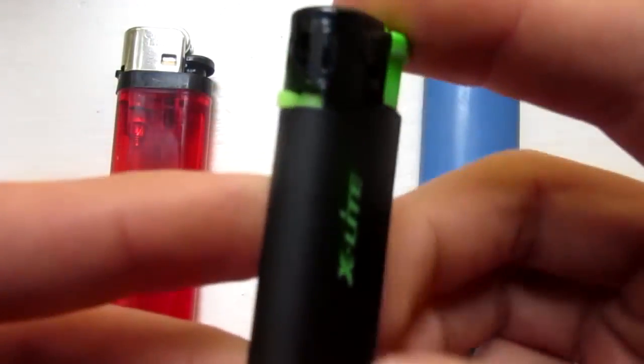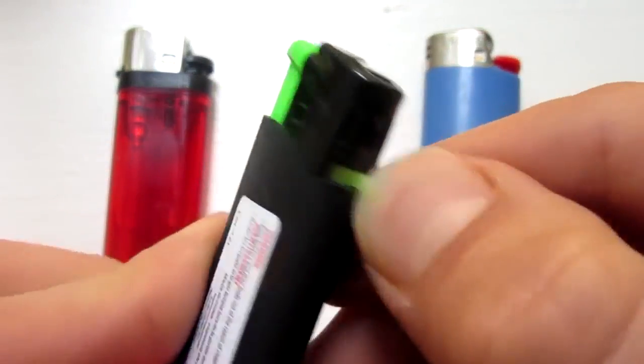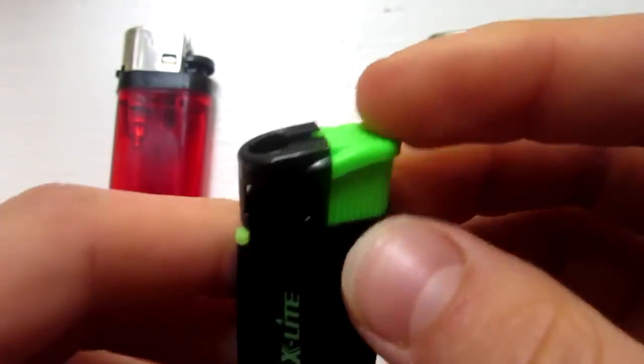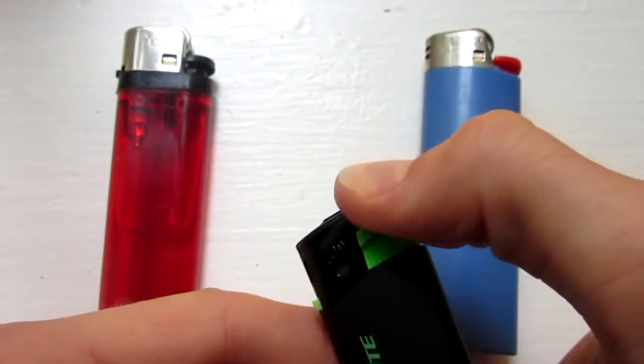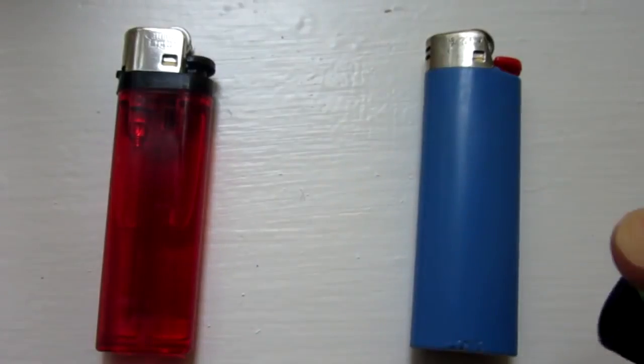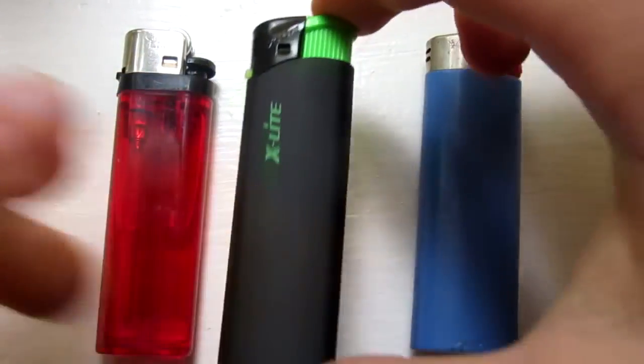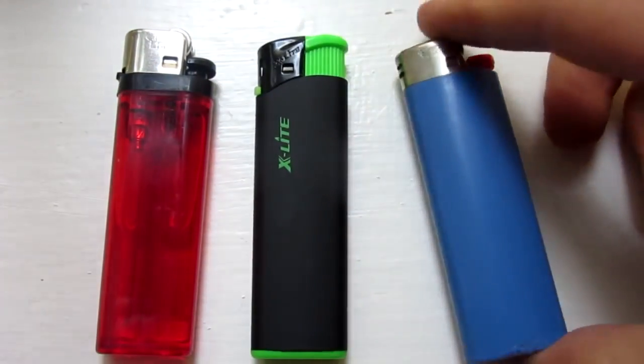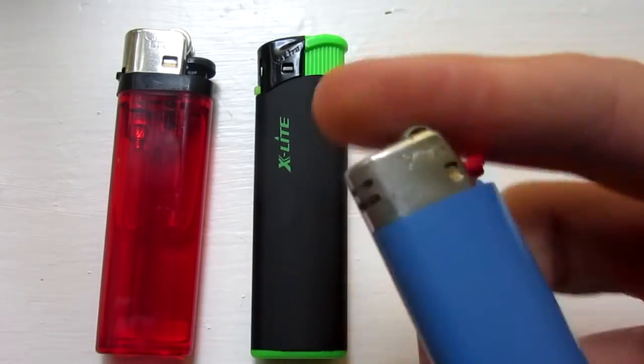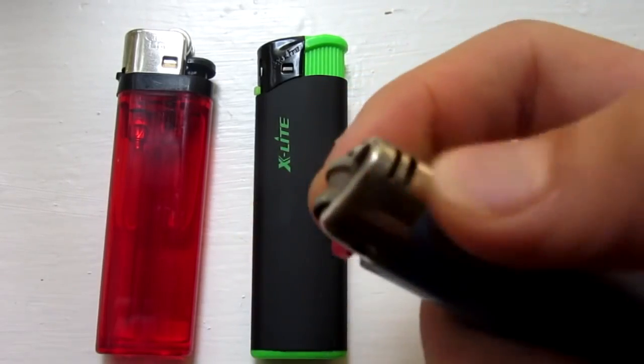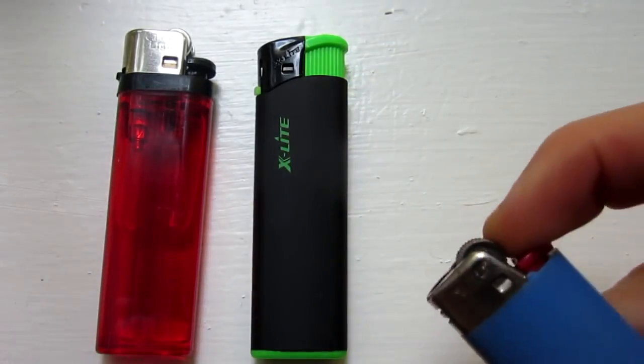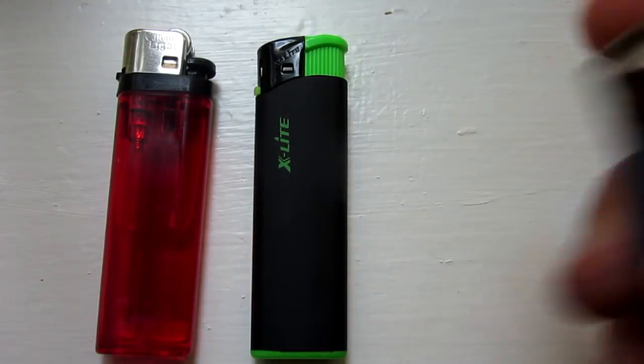Now, other lighters do have the adjustable knob, like this one here called X-Lite, and it does still work pretty good. Not as good as the other one, but if it has the knob, it will work. This will not work with Bic lighters, as you can see, there's no adjustable thing and Bic lighters just suck, so don't buy one of these ones.